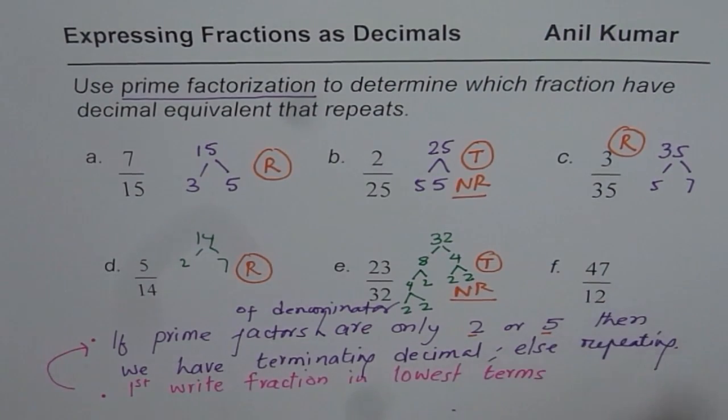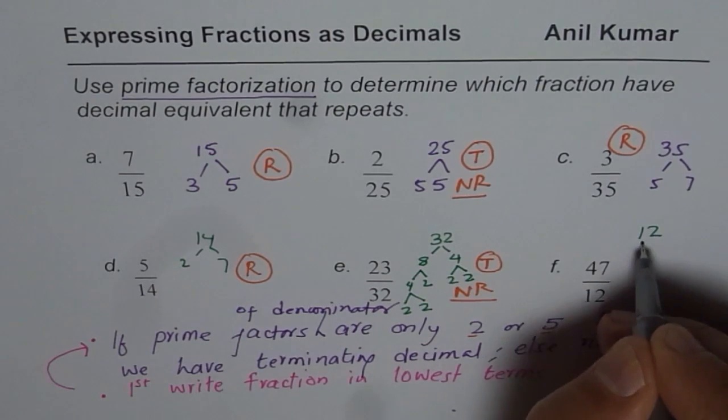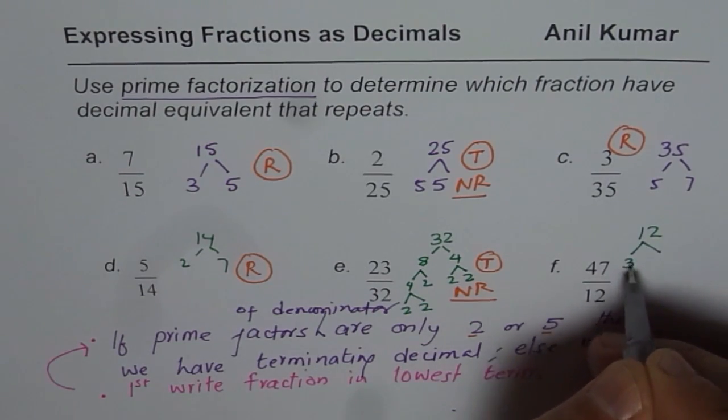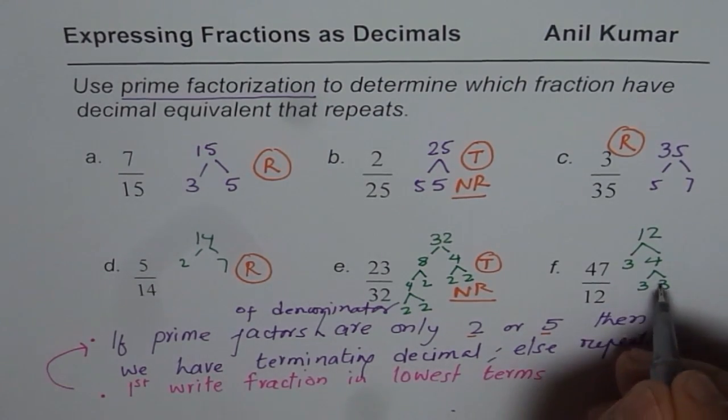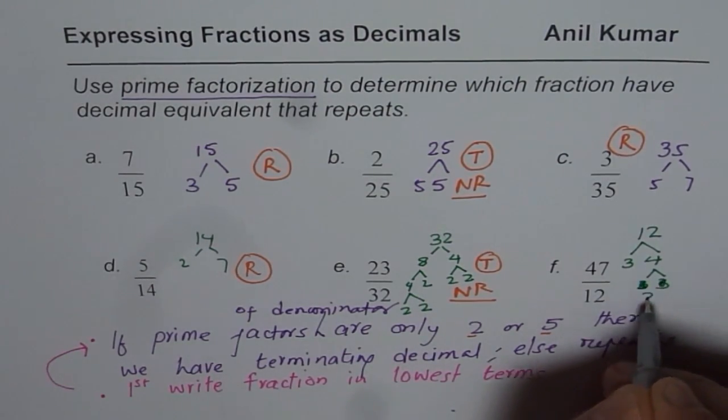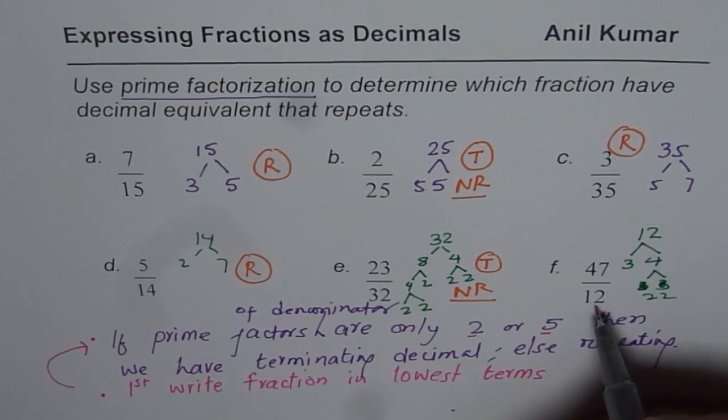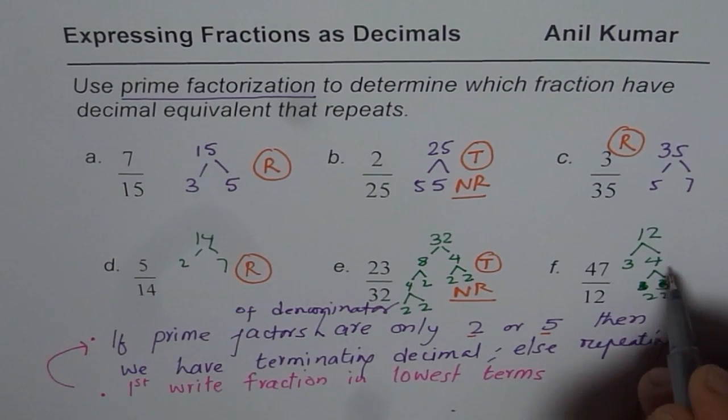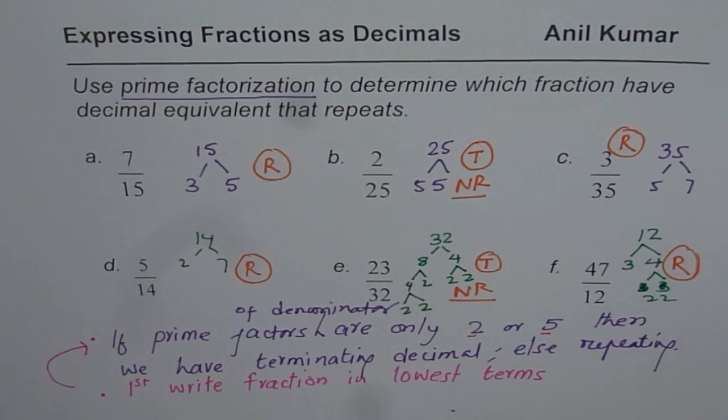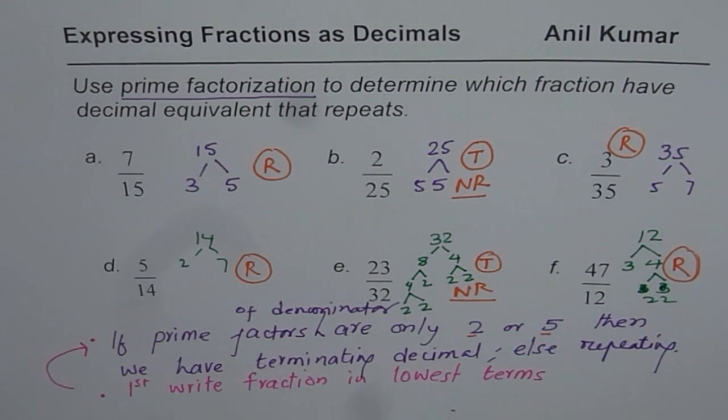Next one is 47 over 12. We factor only the denominator: 3 times 4 is 12, and 2 times 2 is 4. Since 3 is one of the factors of 12, this is going to be a repeating decimal.